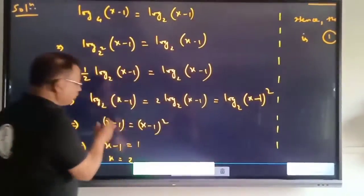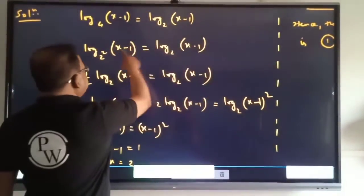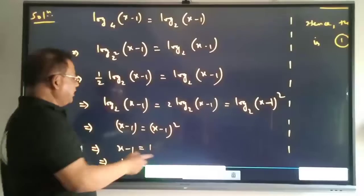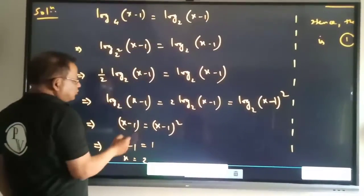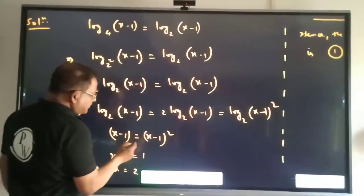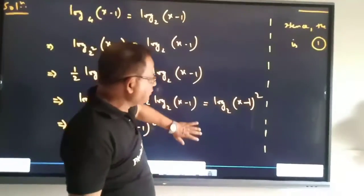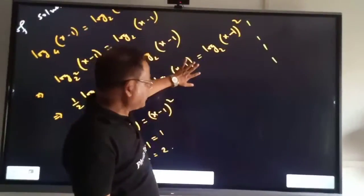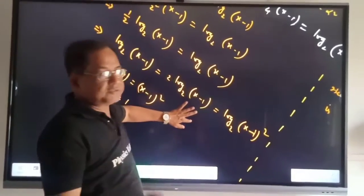Remove that denominator to get x minus 1 equals this. Here x should not equal 1, so that term cancels. X minus 1 equals 1, therefore x equals 2. So the number of solutions is 1.